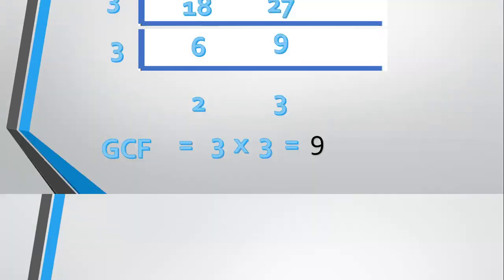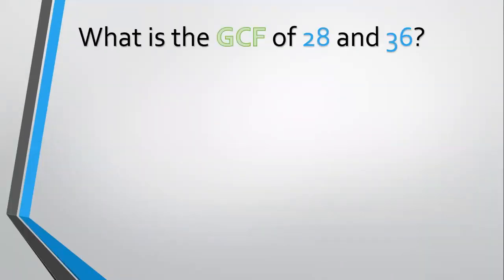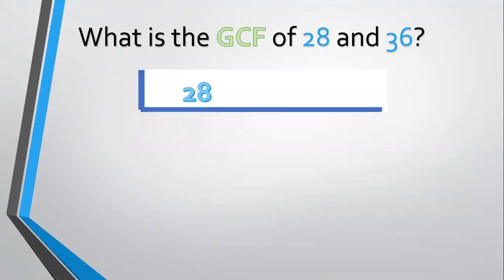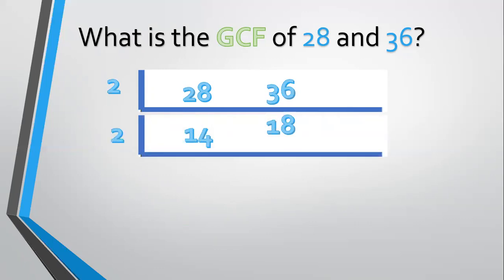Let's have another example. How about 28 and 36? List them: 28 and 36. We start with the prime number 2. 28 divided by 2 equals 14. 36 divided by 2 equals 18. We can still divide 14 and 18 by 2: 14 divided by 2 equals 7, and 18 divided by 2 equals 9. Now 7 and 9 have no more common factor, so we multiply: 2 times 2 equals 4. The greatest common factor of 28 and 36 is 4.